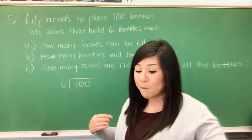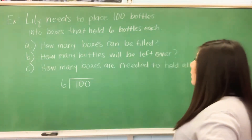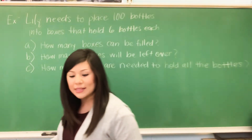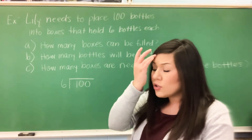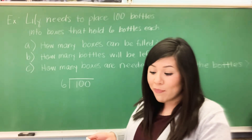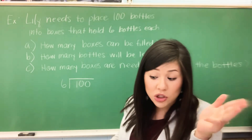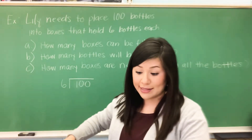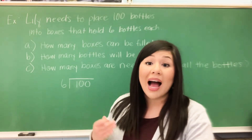So we're going to do a few examples here on the board. The first example: Lily needs to place 100 bottles into boxes that hold six bottles each. When doing word problems with remainders, you need to be careful to identify exactly what the question is asking. So what is the question asking here? First of all: A) How many boxes can be filled? B) How many bottles will be left over? And C) How many boxes are needed to hold all the bottles? Each of these questions asks for different information. To answer each question, we will begin by dividing 100 by six — they gave us the information there: 100 bottles, boxes that hold six each.